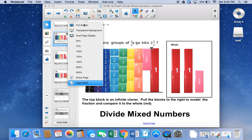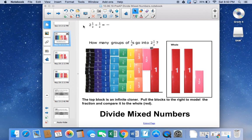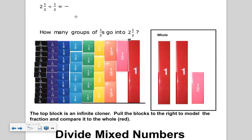How do you divide mixed numbers? So we have two and a half bars here. I would like to divide them into halves. In other words, how many halves go into two and a half?